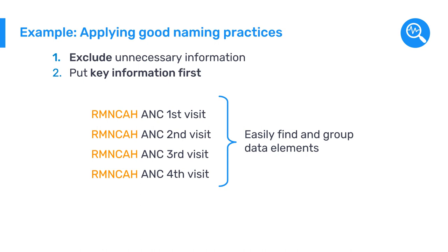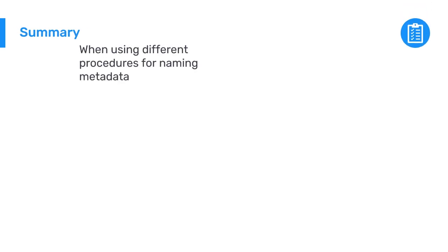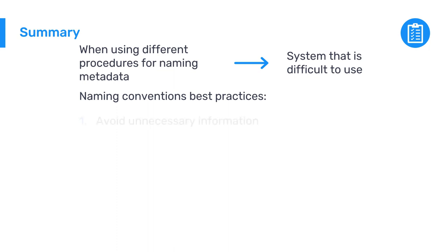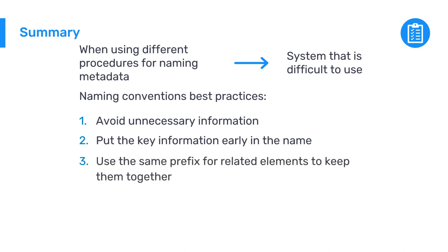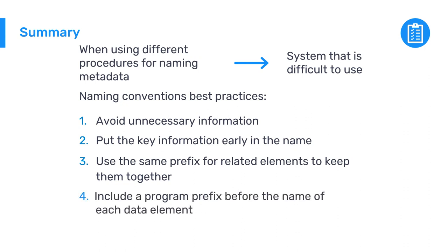In summary, when programs, services, and individuals use different procedures for naming data elements and other metadata in the system, the result is often a system that is difficult to use. Using naming conventions when creating metadata can help mitigate these issues. These best practices include: avoid unnecessary information, put the important information early in the name, use the same prefix for related data elements to keep them together, and include a program prefix before the name of each data element.